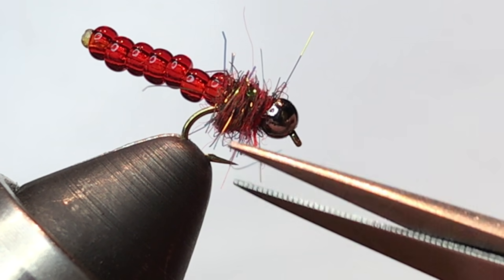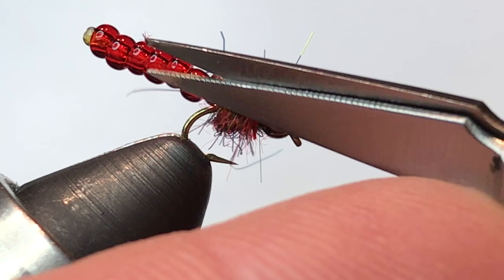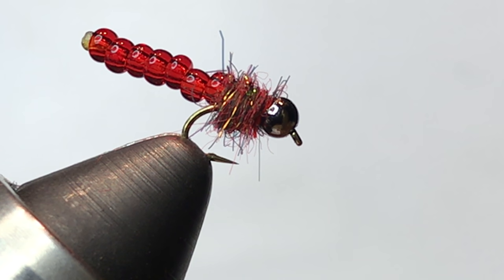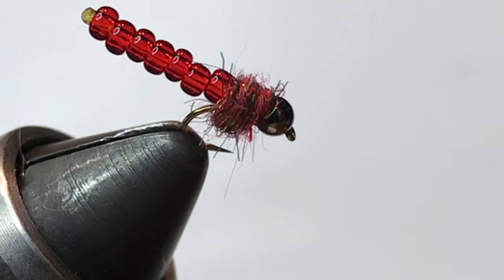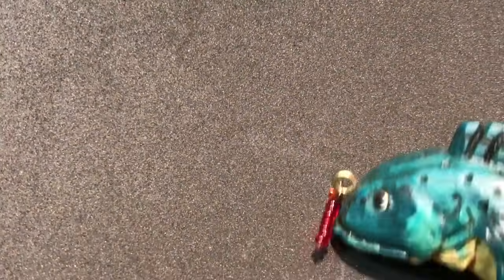At this point you can trim off any of the crazy fibers that maybe stick out a little too far and shrink it down if you need to. And there you have it, the beaded blood midge. And as you can see here, it does work.